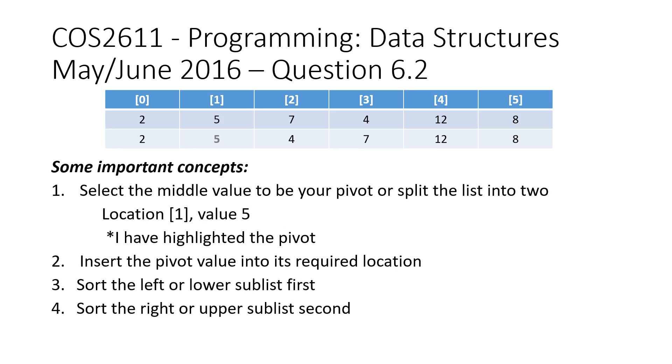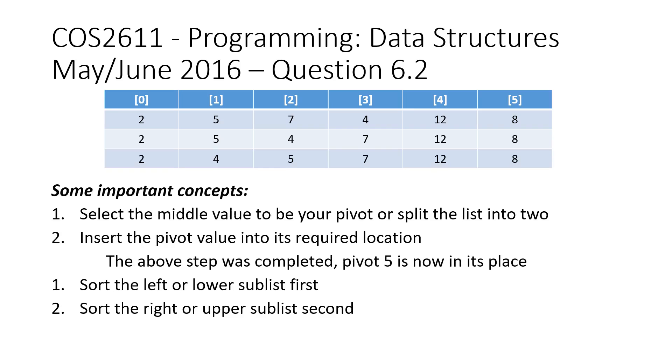So that is my pivot 7. The next one I identify is on the left hand side because it says sort the left or lower sublist first. So the next one I've identified is number 5, I've highlighted that as my pivot. Now I'm going to move that pivot. As you can see, I've moved it to the right. So although it looks like I'm swapping the 4 and the 5, I'm actually inserting the 5 in the place of 4, and the 4 is shifting one to the left.